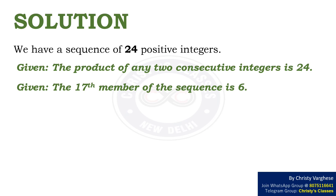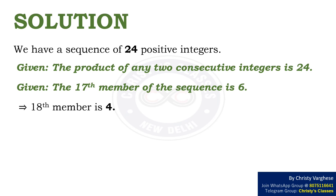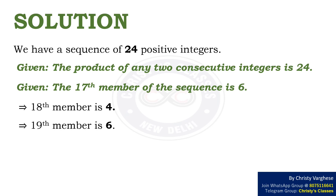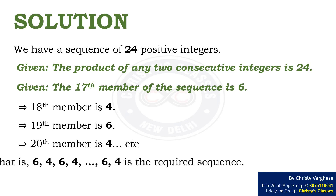To get 24 as the product, we need to multiply 6 with 4. Therefore, the 18th member of the sequence is 4. This implies that the 19th member is 6, and the 20th member is 4, and so on.